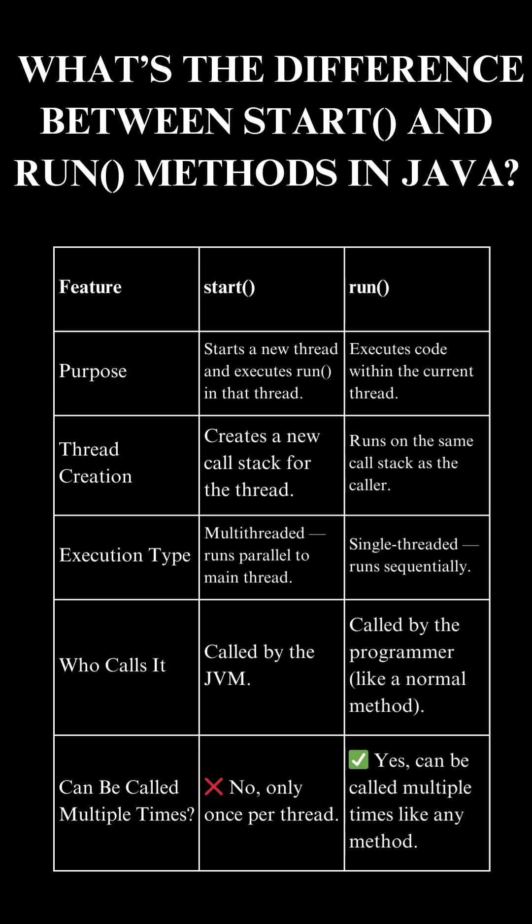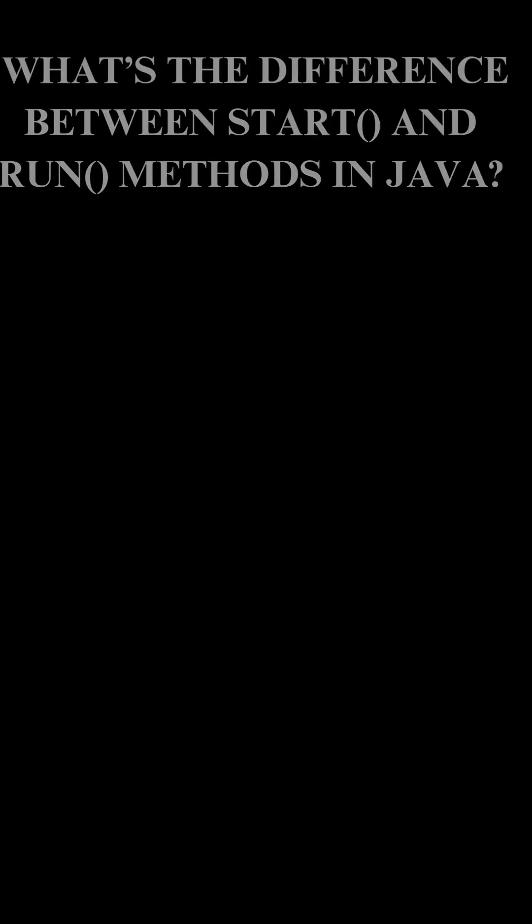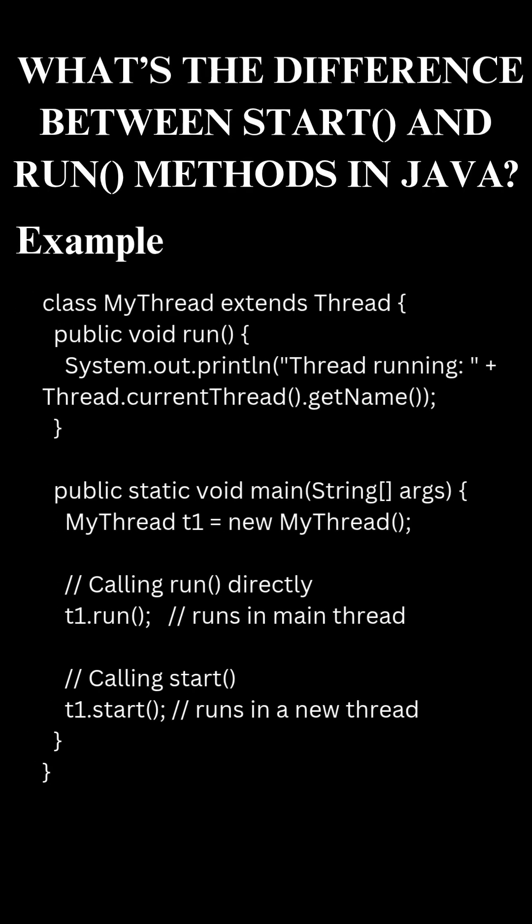The run method is single-threaded and runs sequentially. The start method is called by the JVM, whereas the run method is called by the programmer like a normal method. The start method cannot be called multiple times — it is called only once per thread — whereas the run method can be called multiple times like any other method.